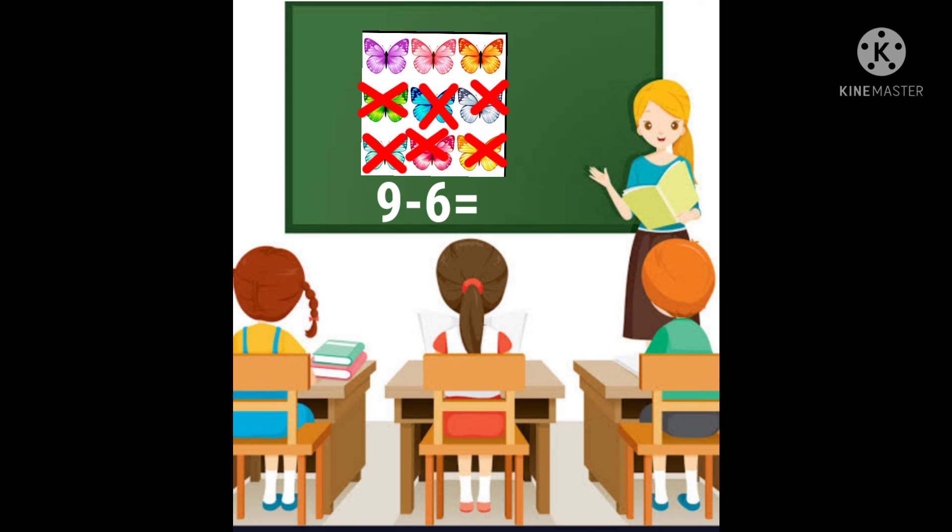Now, how many butterflies are left? Count. 1, 2, 3. 3 butterflies are left. That means, 9 minus 6 is equal to 3.